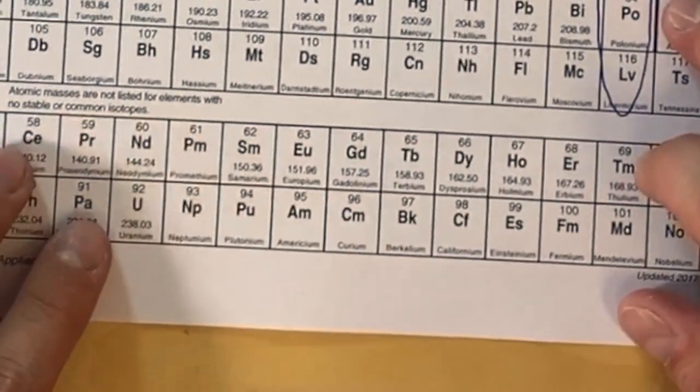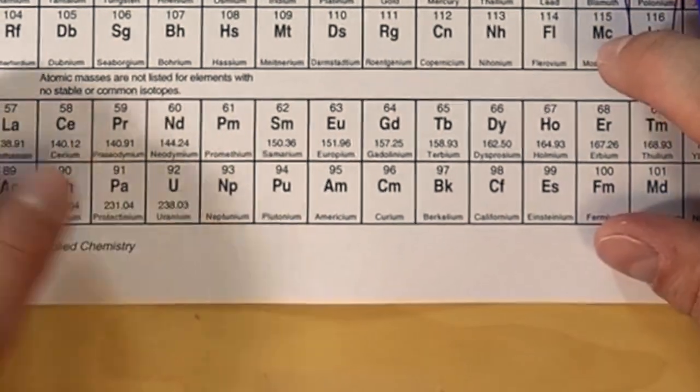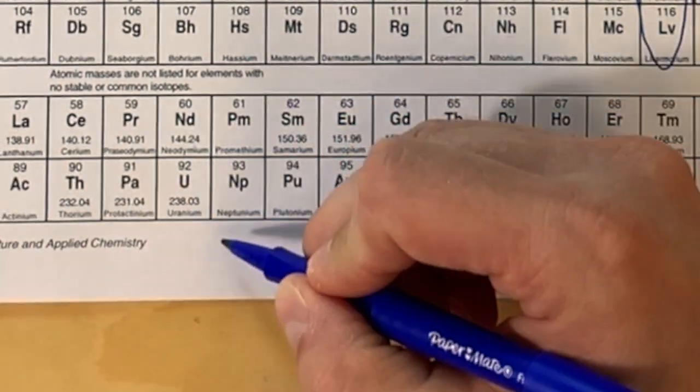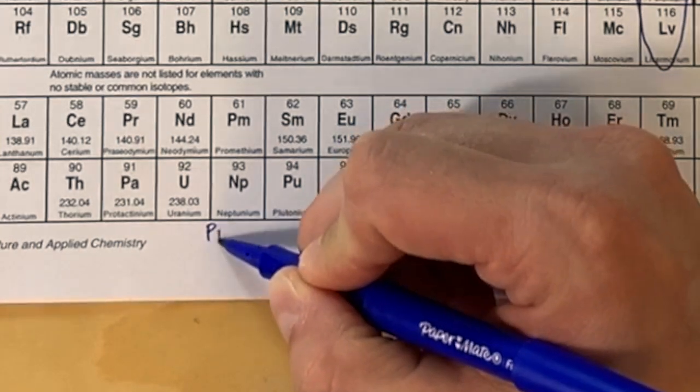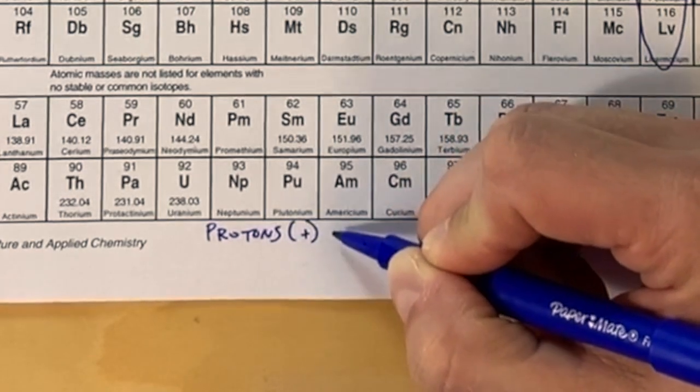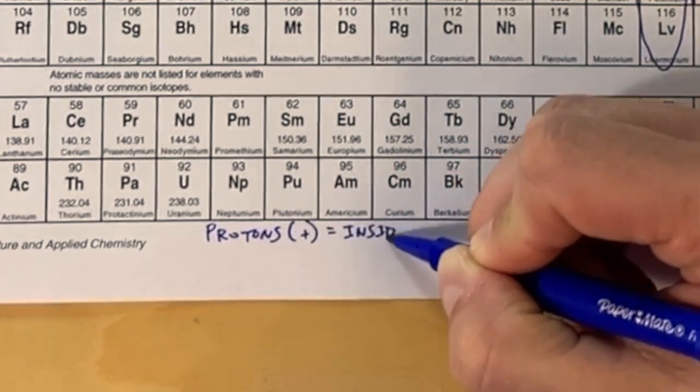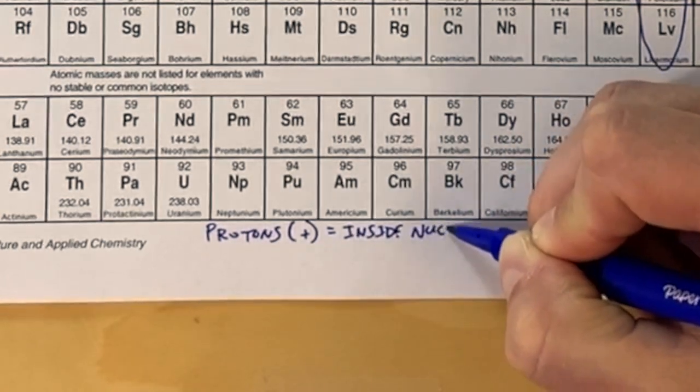Now we're going to turn our paper back and look at the bottom of the periodic table and make some notes down here. We're going to talk about the subatomic particles, those are the three main things that live within every atom. First, we have protons. They have a positive charge and they're found inside the nucleus of the atom.